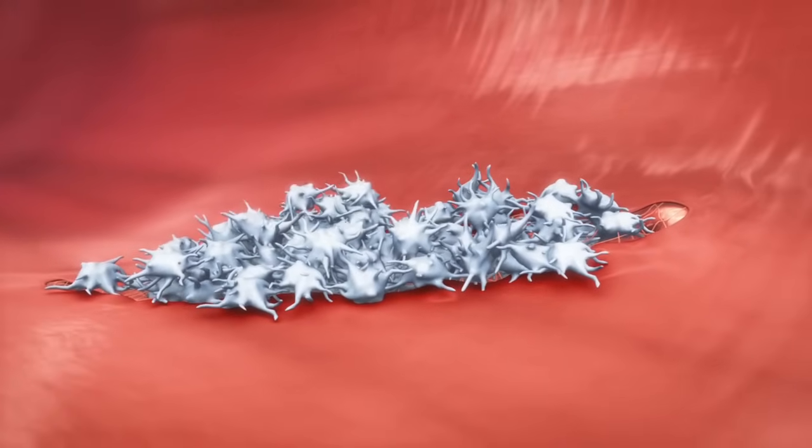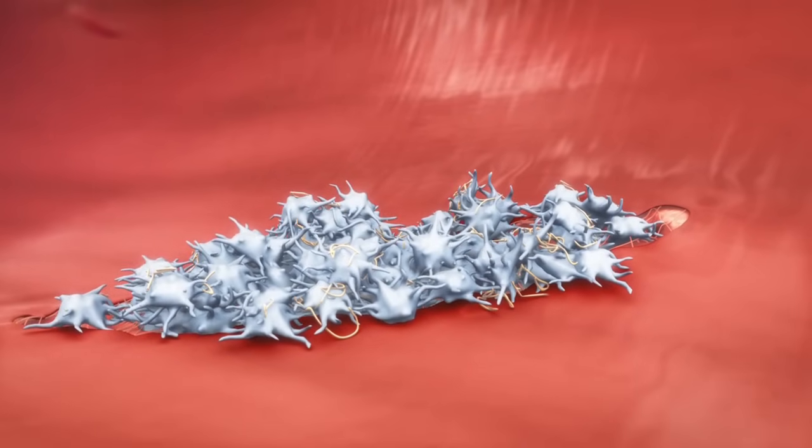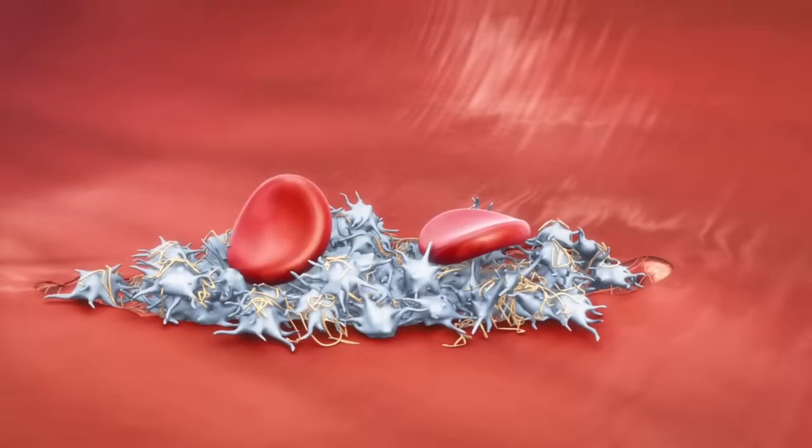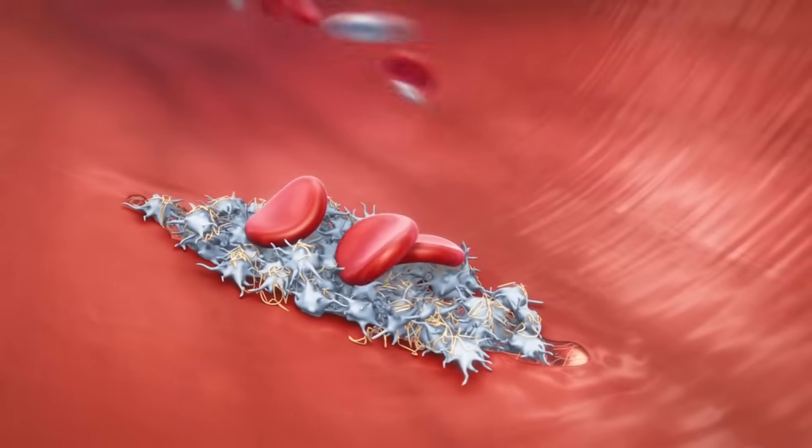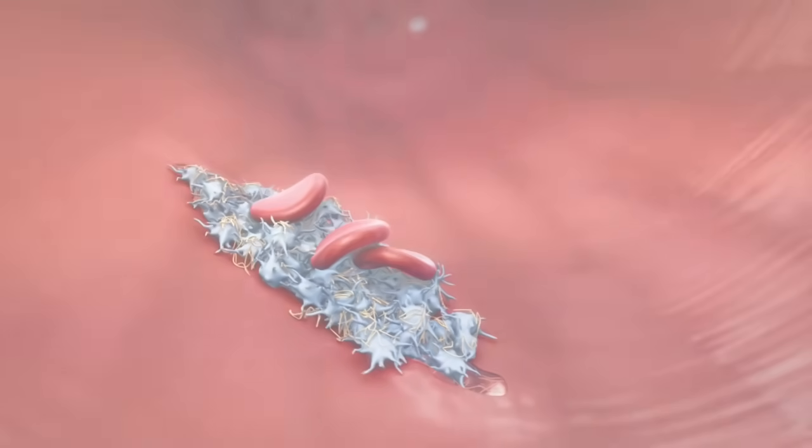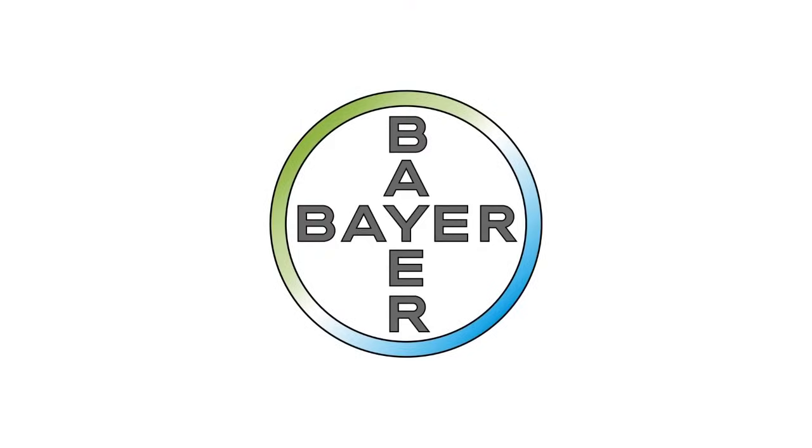Additionally, thrombin induces the formation of fibrin for the mesh stabilizing the clot. The self-reinforcing process of platelet activation, crucial in the formation of blood clots, is an obvious therapeutic target in conditions caused by inappropriately triggered blood coagulation.